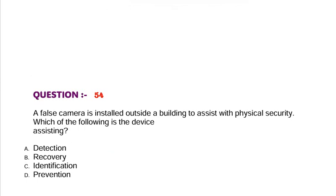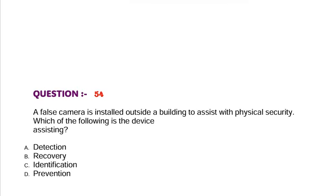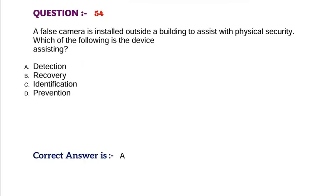Question: A false camera is installed outside a building to assist with physical security. Which of the following is the device assisting? Option A, detection. Option B, recovery. Option C, identification. Option D, prevention. Correct answer is Option A.